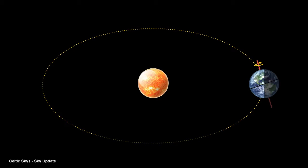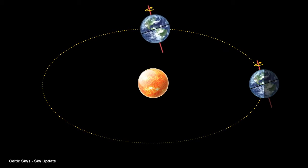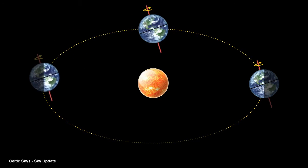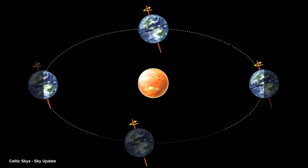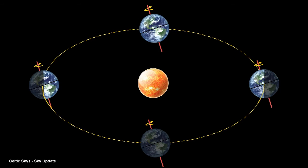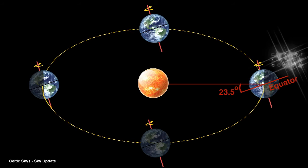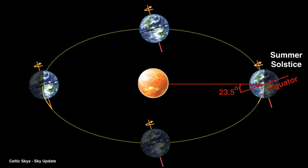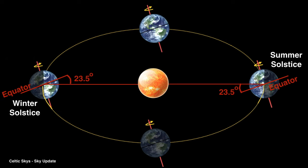In a previous video we described how the Earth's axis is tilted to the plane of its orbit around the Sun. From the animation we can see that sometimes the north pole of the axis is tilted towards the Sun while the southern tip is tilted away from it. Maximum tilt occurs at the summer solstice. On the opposite side of the orbital plane the situation is reversed at the winter solstice.